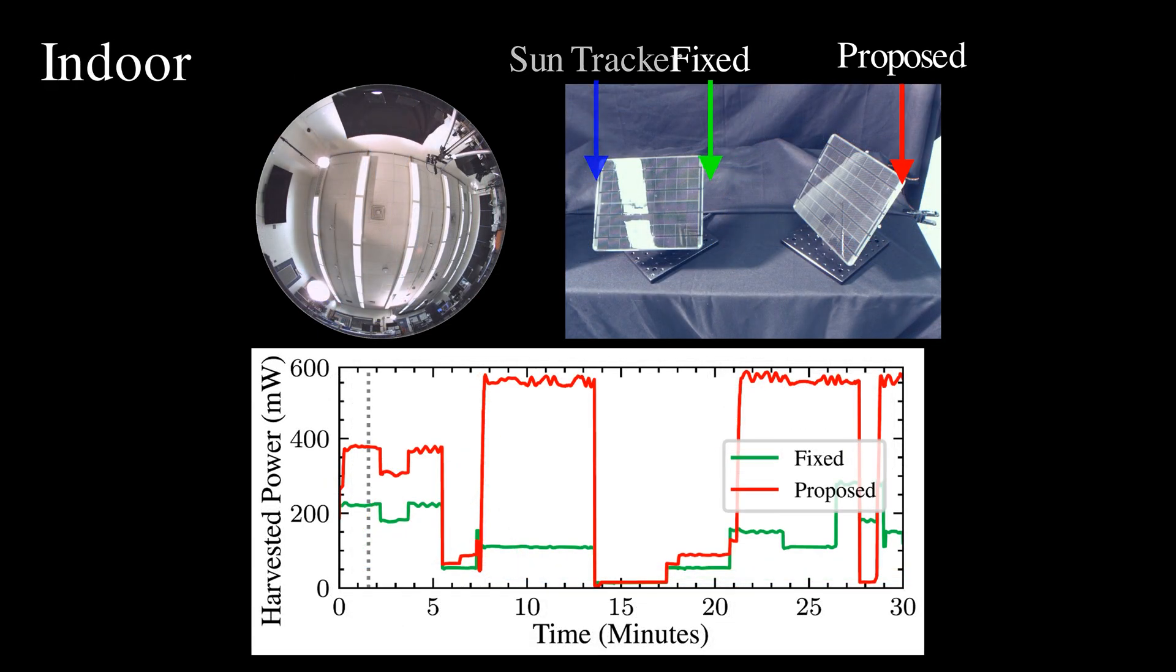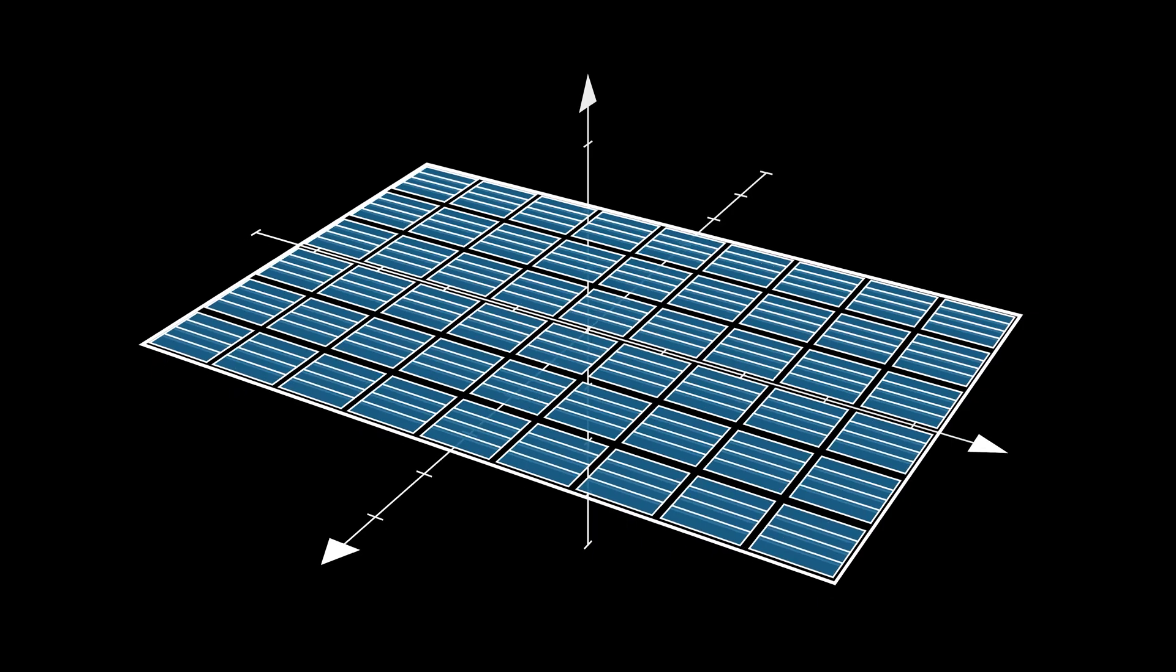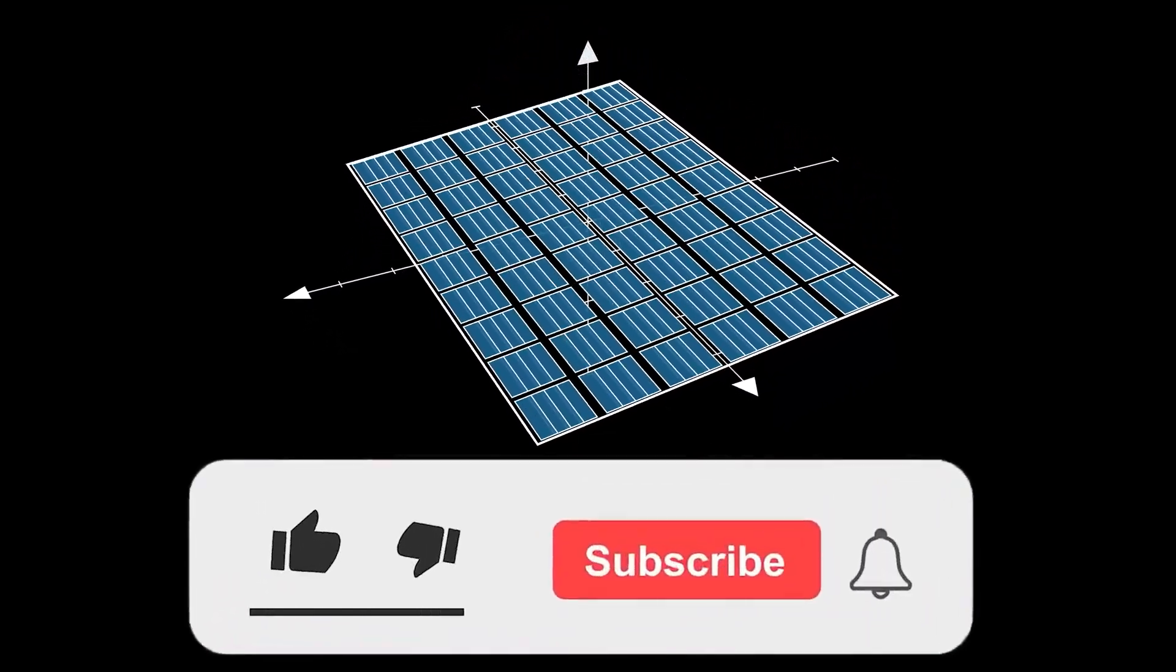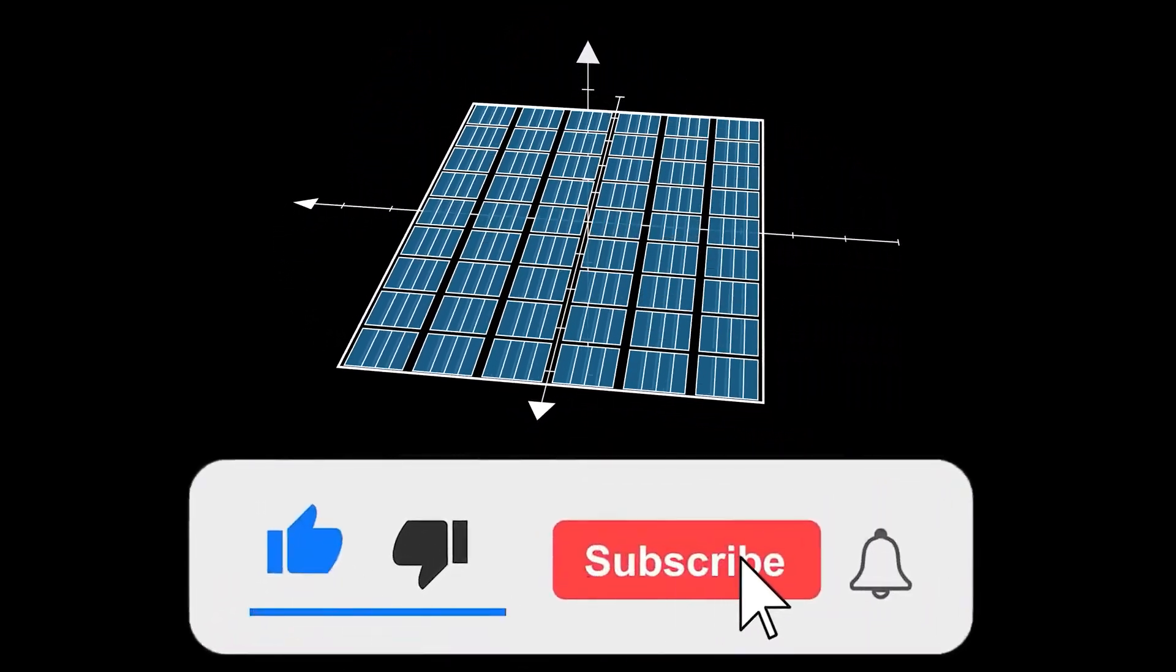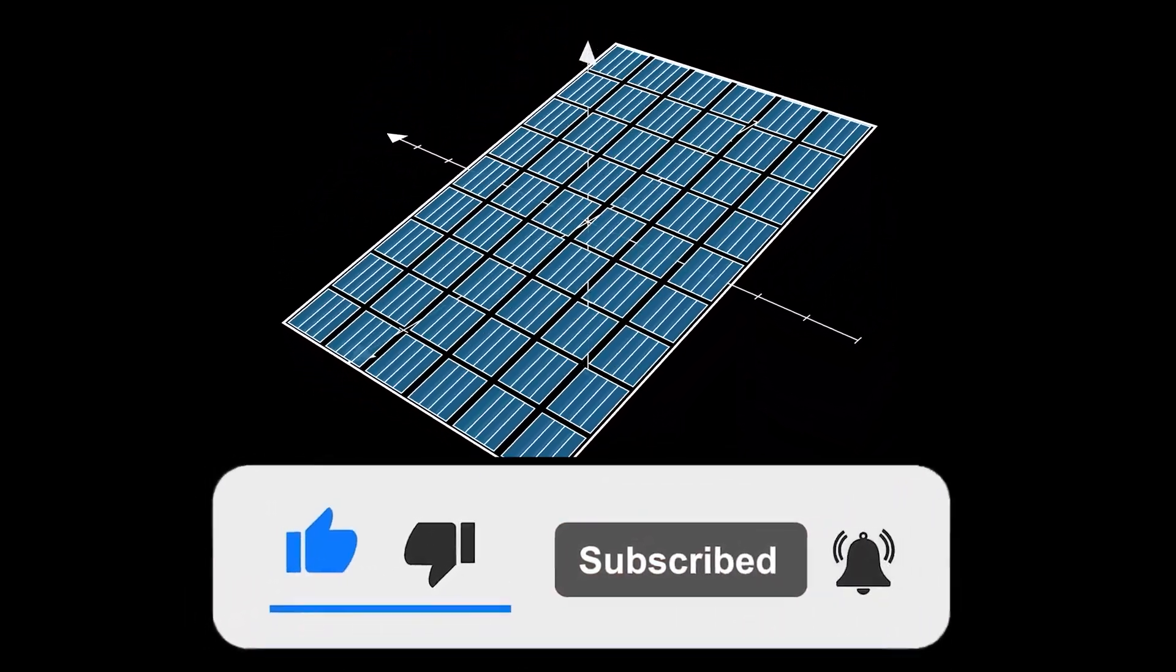Finally, in the indoor environment, the lighting can change dramatically as people walking in the space can turn on and off different floor lamps, creating constantly shifting illumination. This makes the panel's ability to orient itself towards the direction of maximum irradiance especially important. I hope you enjoyed this video, thanks for watching, and I will see you next time.